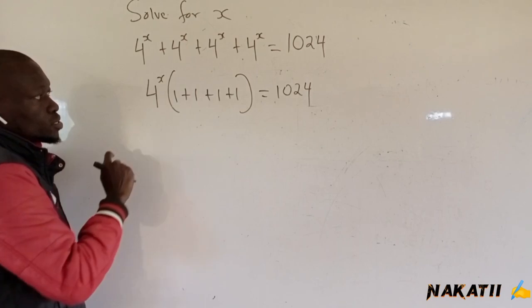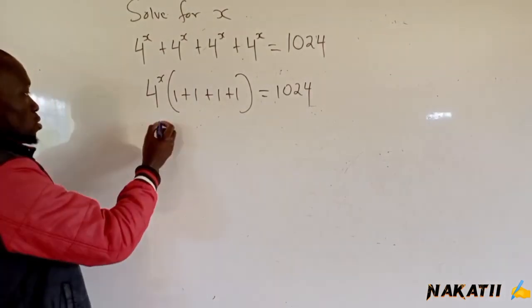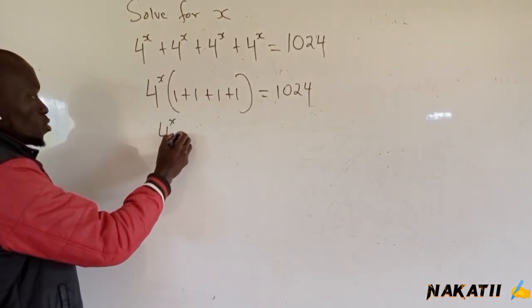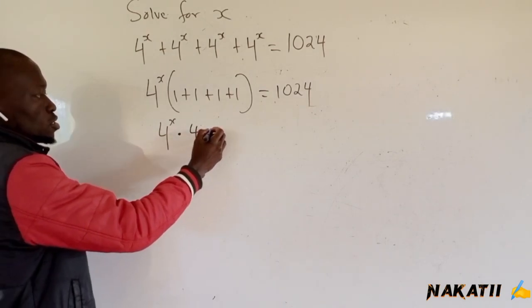If we add these ones, we're going to get 4. We will have 4 raised to x multiplied by 4 equals 1024.